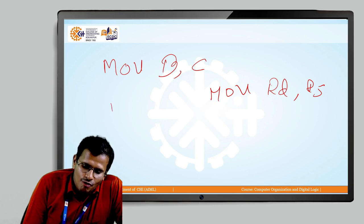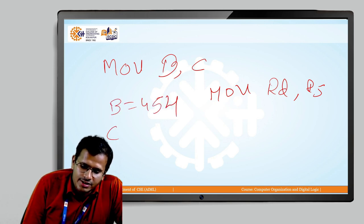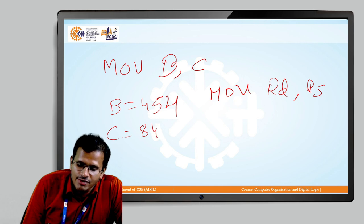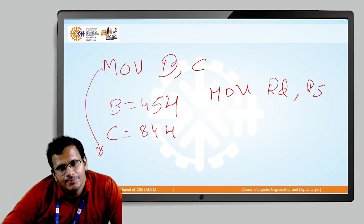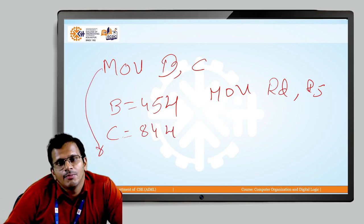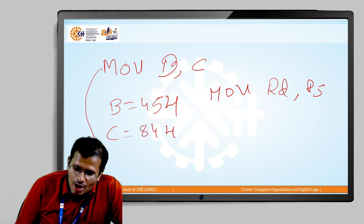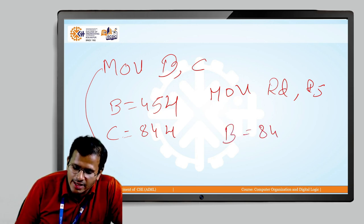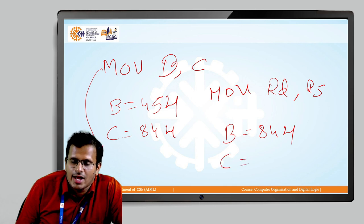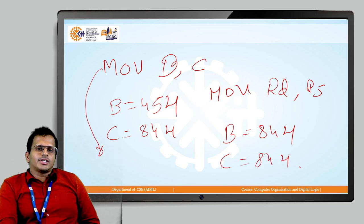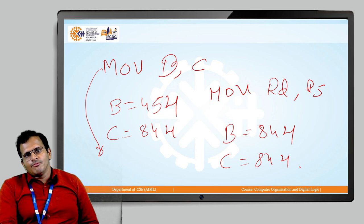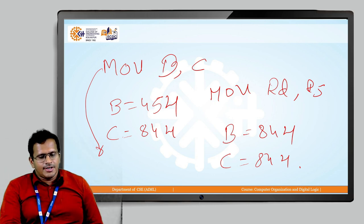For example, if the value of B is 45H and the value of C is 84H, and we execute the instruction MOV B, C, the value of the C register will be passed to the B register. After executing that operation, the value of B becomes 84H and the value of C remains 84H. So in the MOV instruction, an 8-bit value is transferred from one register to another.